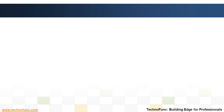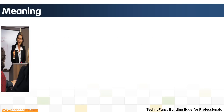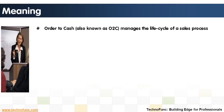Meaning of OrderToCash: OrderToCash, also known as O2C, manages the life cycle of a sales process.